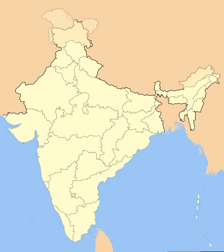India is a federal union comprising 29 states and 7 union territories, for a total of 36 entities. The states and union territories are further subdivided into districts and smaller administrative divisions.